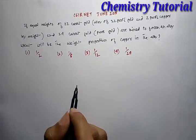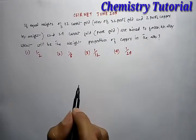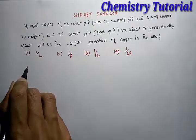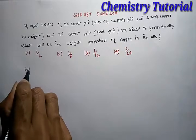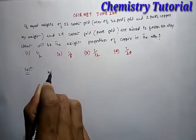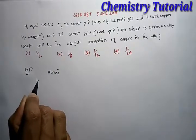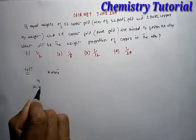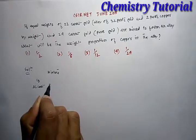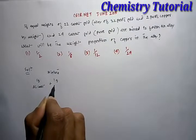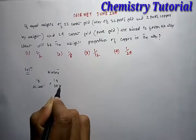That is, we have to calculate the fraction of copper in the mixture. Here, we are given a mixture of equal amount, suppose 1 gram of 22 karat gold and 1 gram of 24 karat gold.